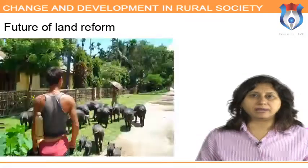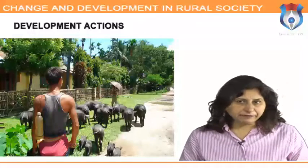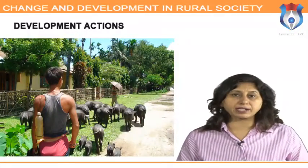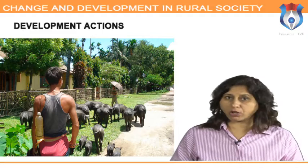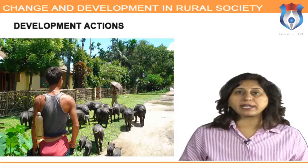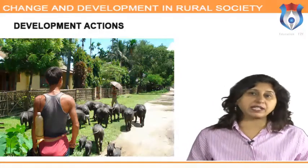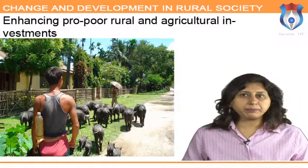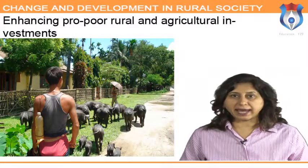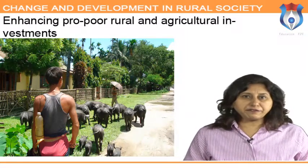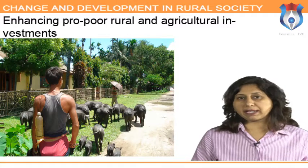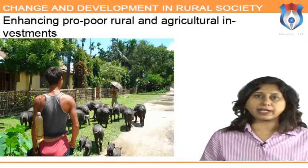Development actions: our country's sustainable GDP will depend on the sustainable development of agriculture, which employs more than 60 percent of India's population. Enhancing pro-poor rural and agricultural investments and cutting subsidies are key priorities. The first strategic decision must be to raise the level of public investment in agricultural and rural India.